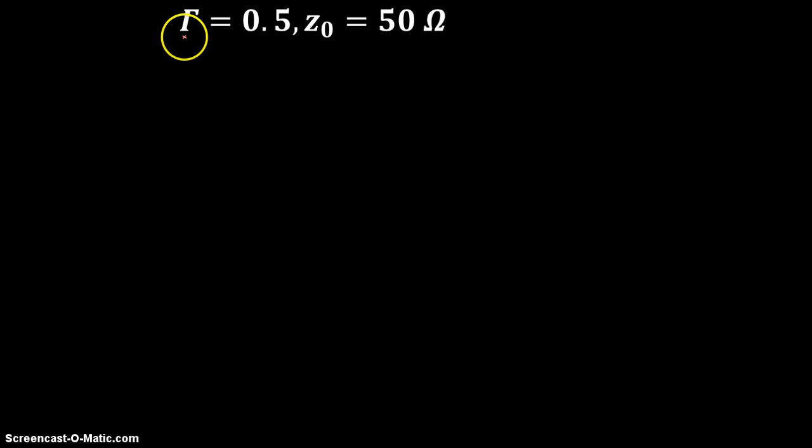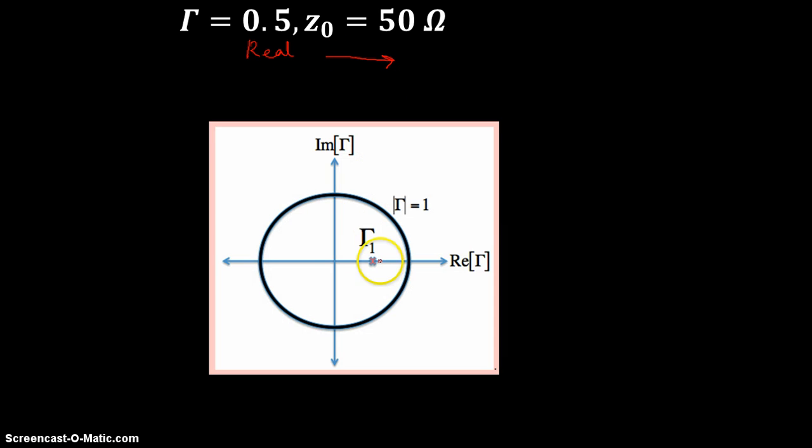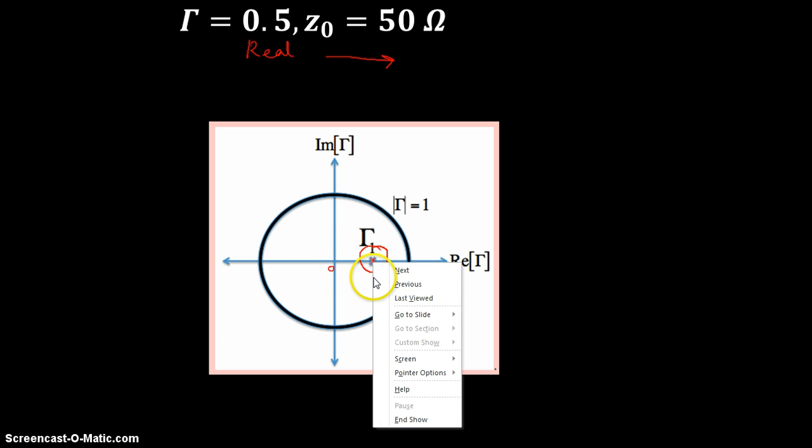If I am having a value of K equal to 0.5, what does this mean? This is a real value. There is no imaginary part, it is completely real. So where would that lie? It should lie on your horizontal axis. So you can see over here, the value of 0.5. If this is 0 and this is 1, the value of 0.5 lies in the middle of it.